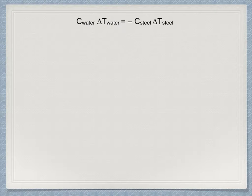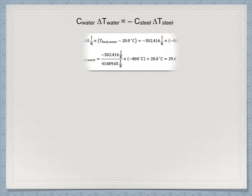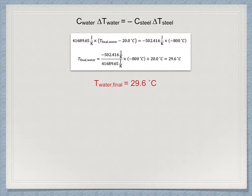So we substitute all of this into the expression C ΔT equals minus C ΔT. We have 41,689.65 joules per kelvin times T_final_water minus 20 equals 502.416 joules per kelvin times minus 800. Rearrange to solve for the final water temperature. Minus 502.416 divided by 41,689.65 times minus 800 plus 20 equals 29.6 degrees Celsius. This is the answer to the question.